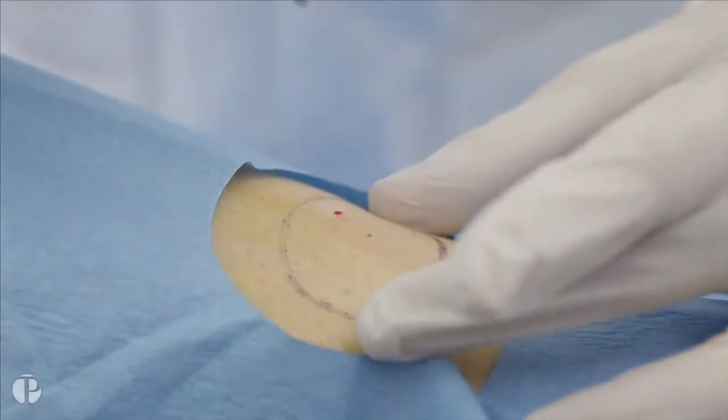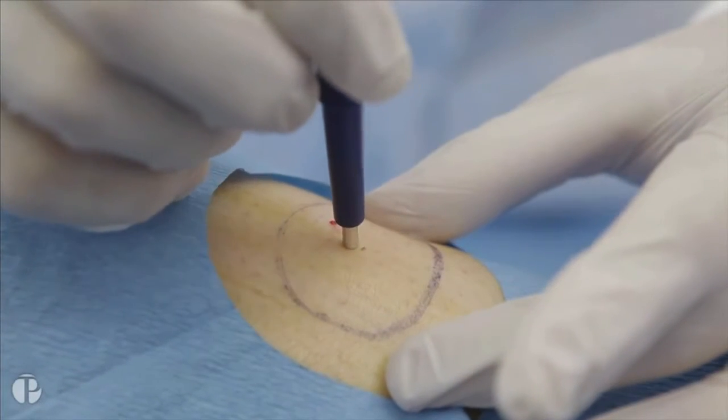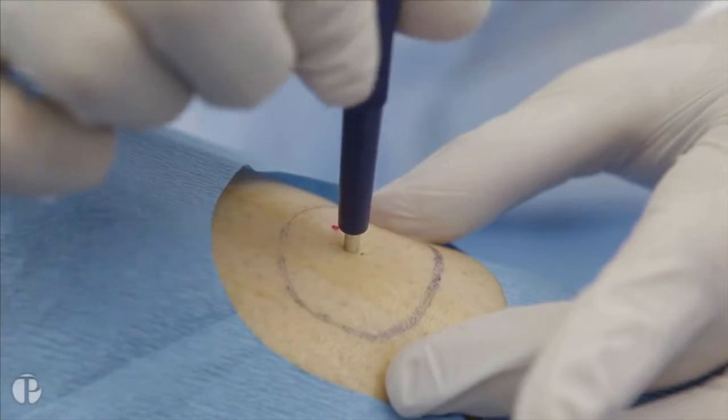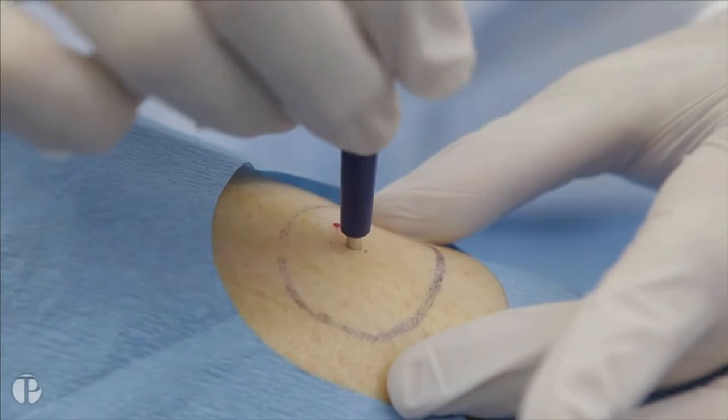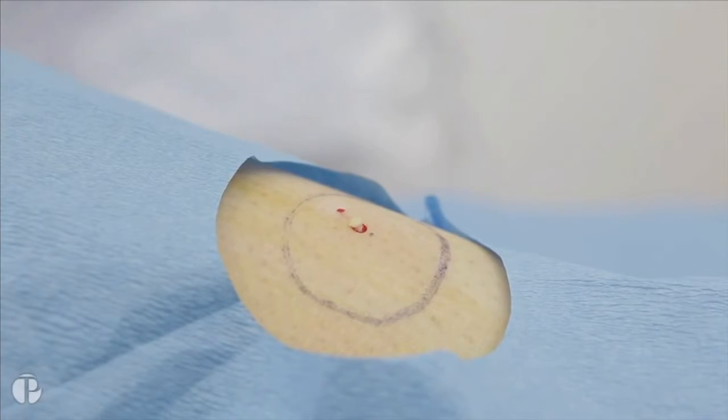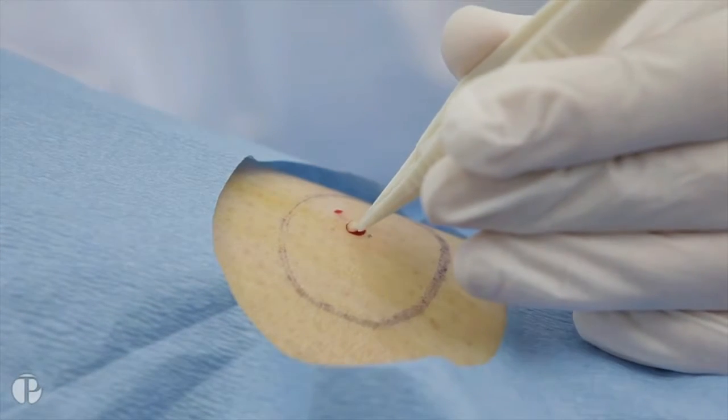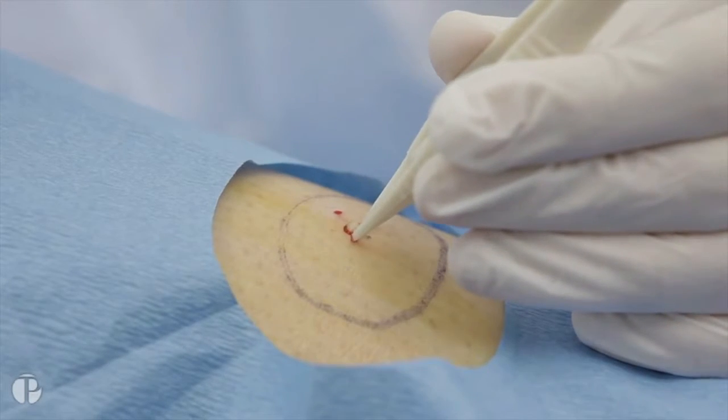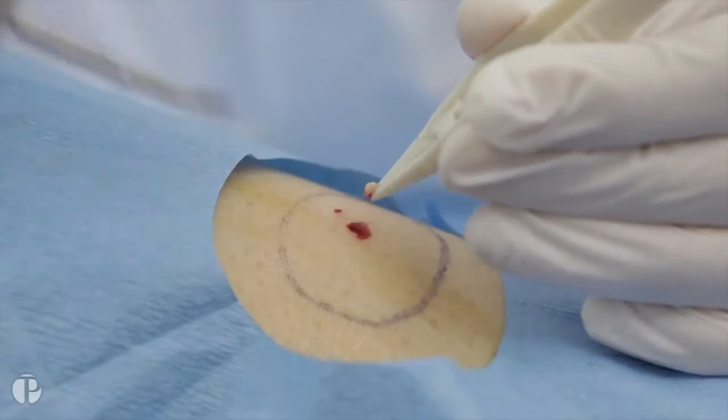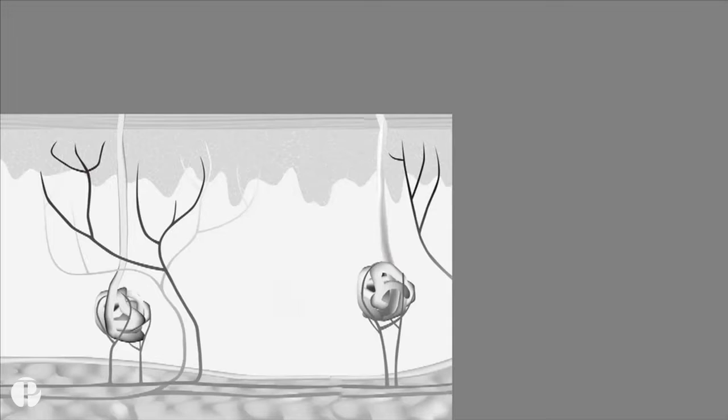Apply pressure to the skin with the punch tool. As you are applying pressure, rotate the tool back and forth so that it punctures the skin. Insert the tool the full distance of the metal head and remove the tool from the site. With the forceps, carefully grasp the sample from underneath the epidermis and use the scissors to remove the sample. Should the sample remain in the metal head of the punch tool, use the plastic stylus to eject the sample into a vial.